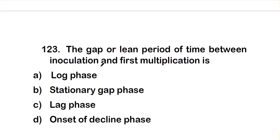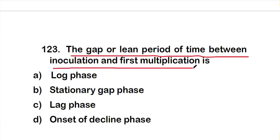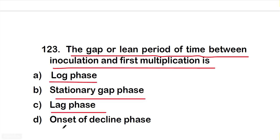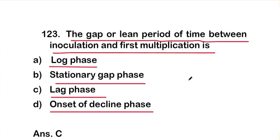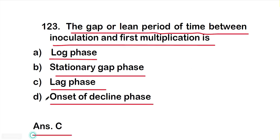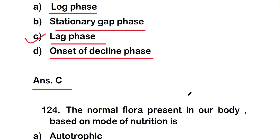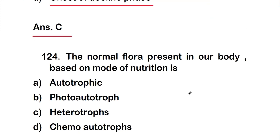Question number 123: The gap or lean period of time between inoculation and fast multiplication is Option A: lock phase, Option B: stationary gap phase, Option C: lag phase, or Option D: onset of decline phase. The right answer is Option C — lag phase.